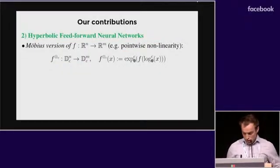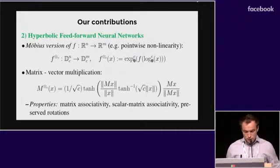Second contribution is to generalize feedforward neural networks to the hyperbolic geometry. We do this in two steps. First, we generalize pointwise nonlinearities via this formula. And second, we generalize matrix vector multiplication. These tools have important properties, for example, matrix associativity.